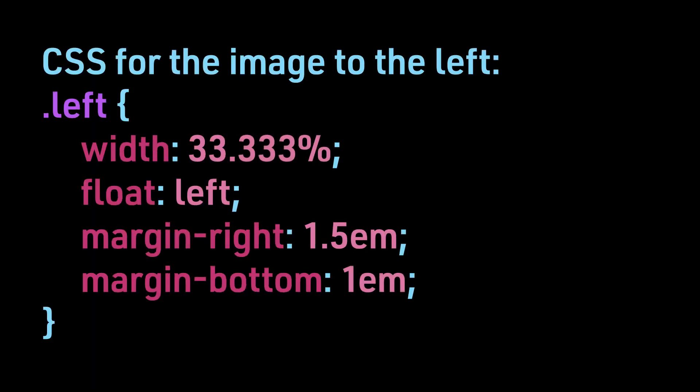Here is the CSS for the image to the left. We target .left. We want the image to span only about one-third of the full width of the containing element. By floating the image to the left, it remains in normal flow and the text will move around it. In order to not have the text right at the edges of the image, we add some margin to the relevant sides so that the text wraps around with some space in between.